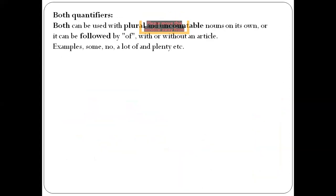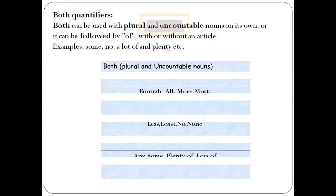Let's say here, both quantifiers. Both can be used with plural and uncountable nouns on its own, or it can be followed by of, like plenty of, a lot of, with or without an article. Example: some, no, a lot of, and likely, etc. This is a table.